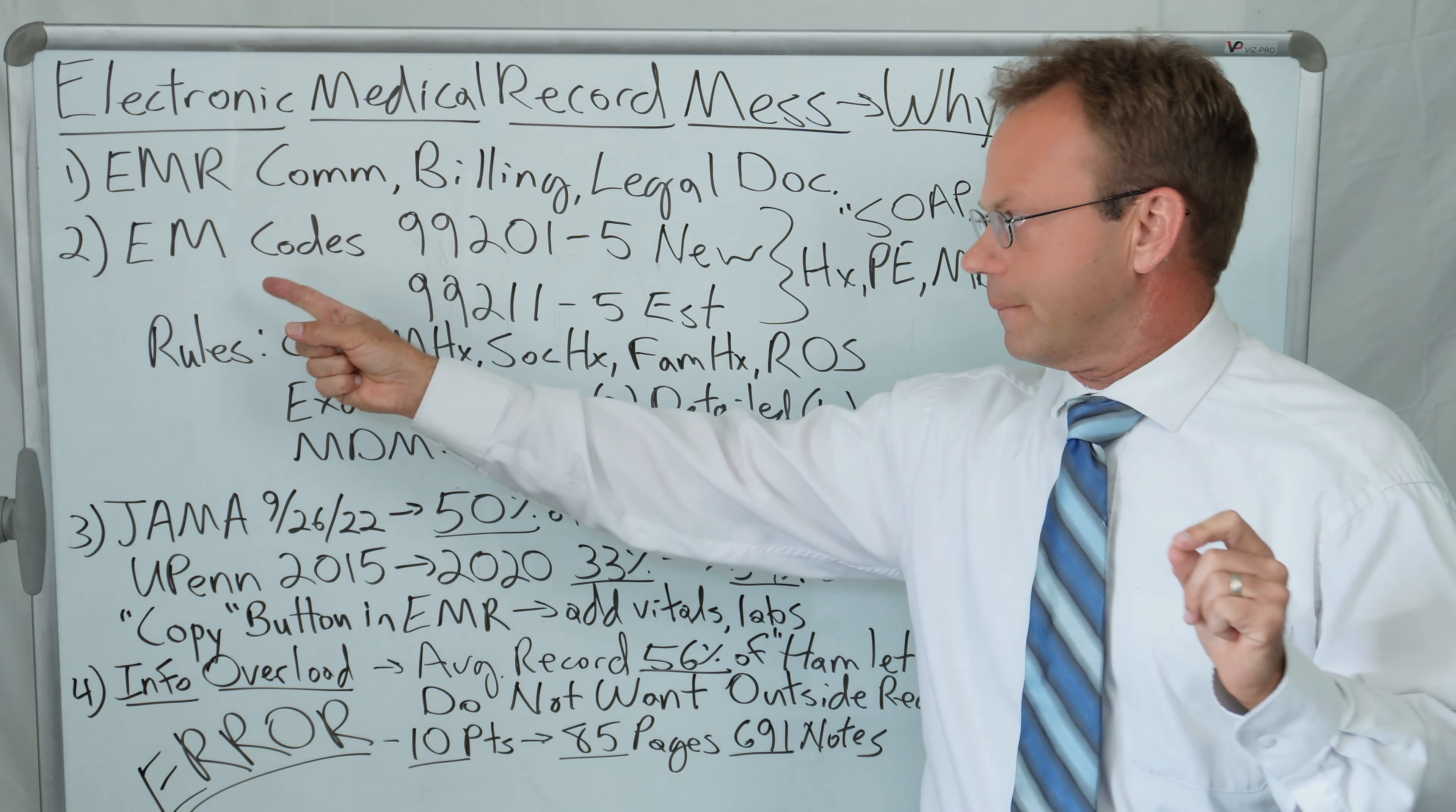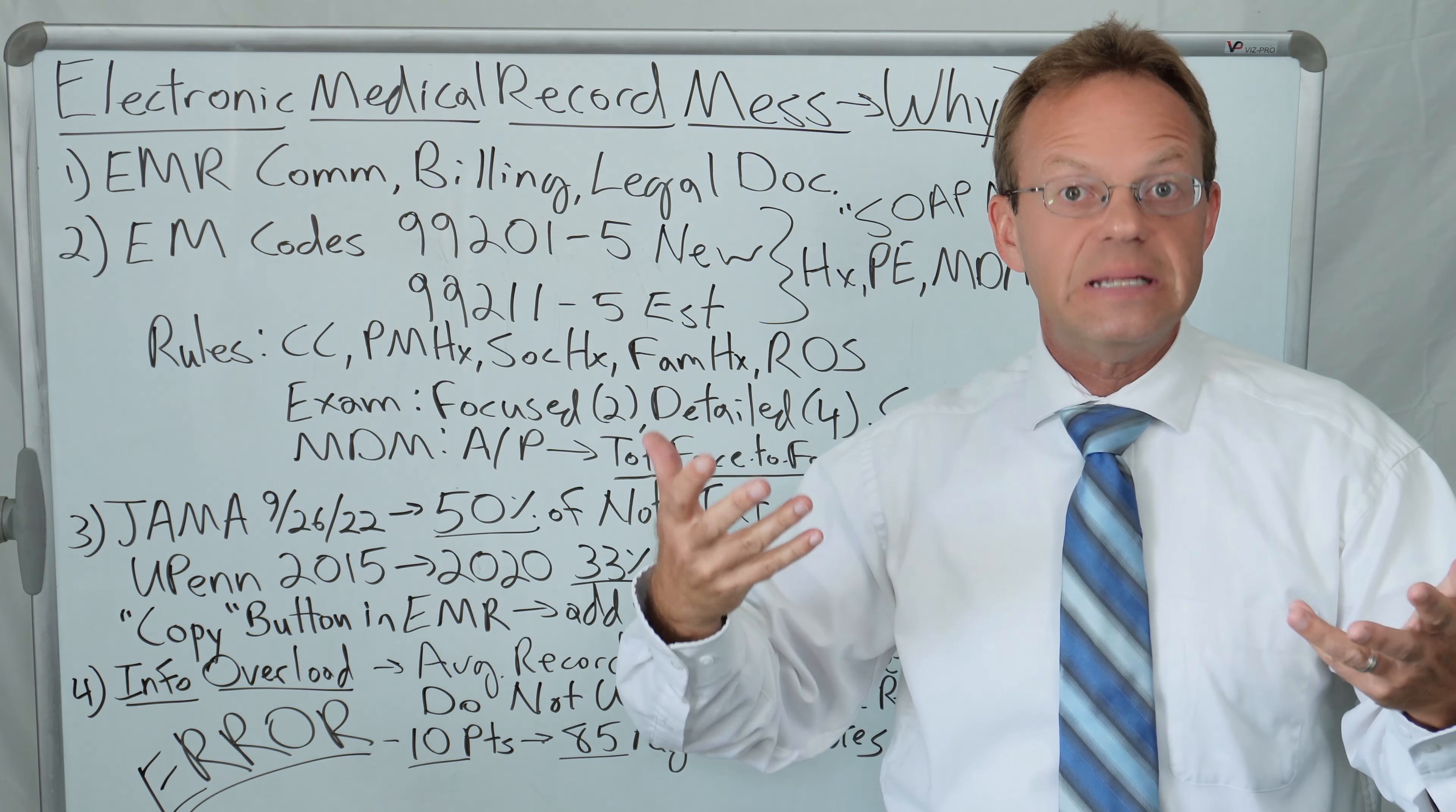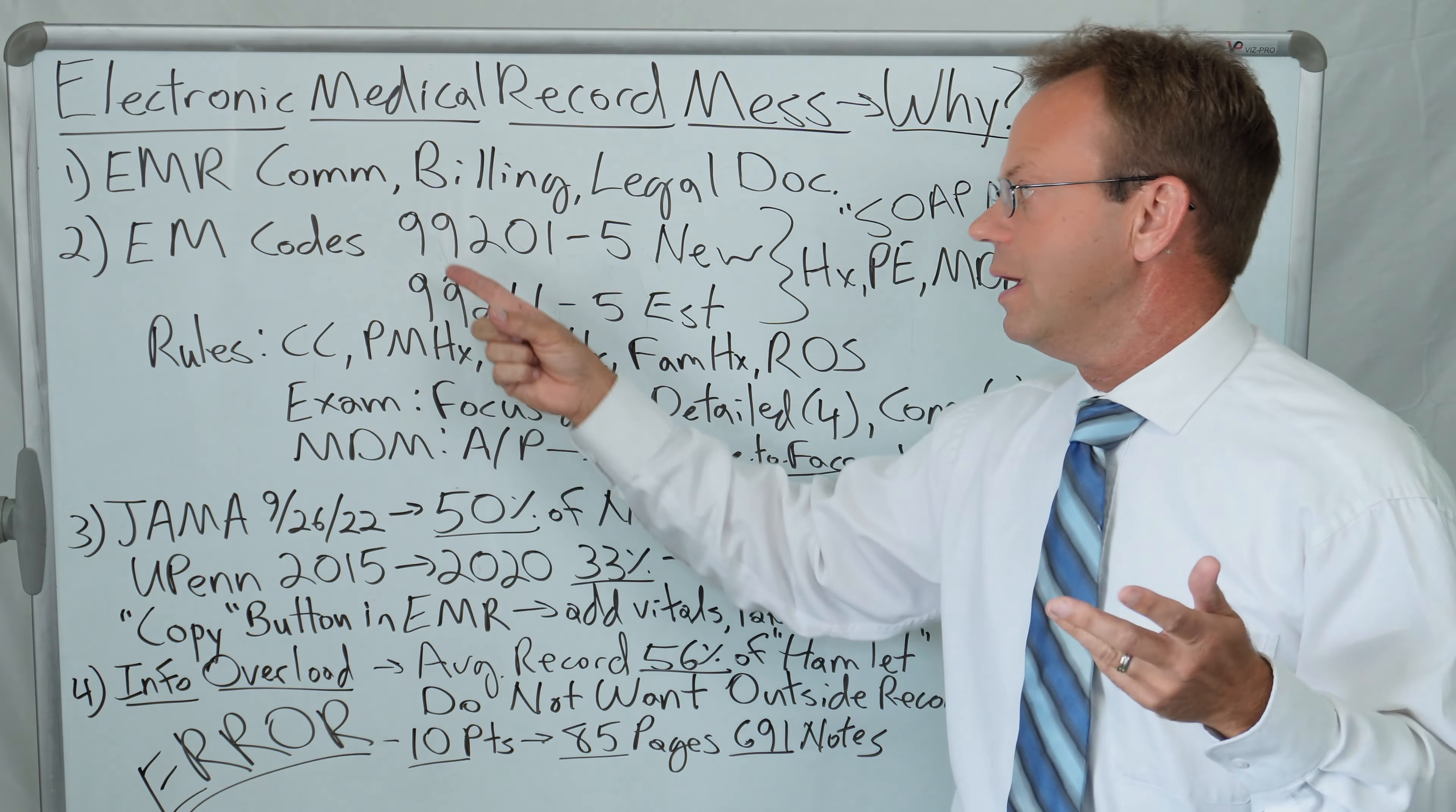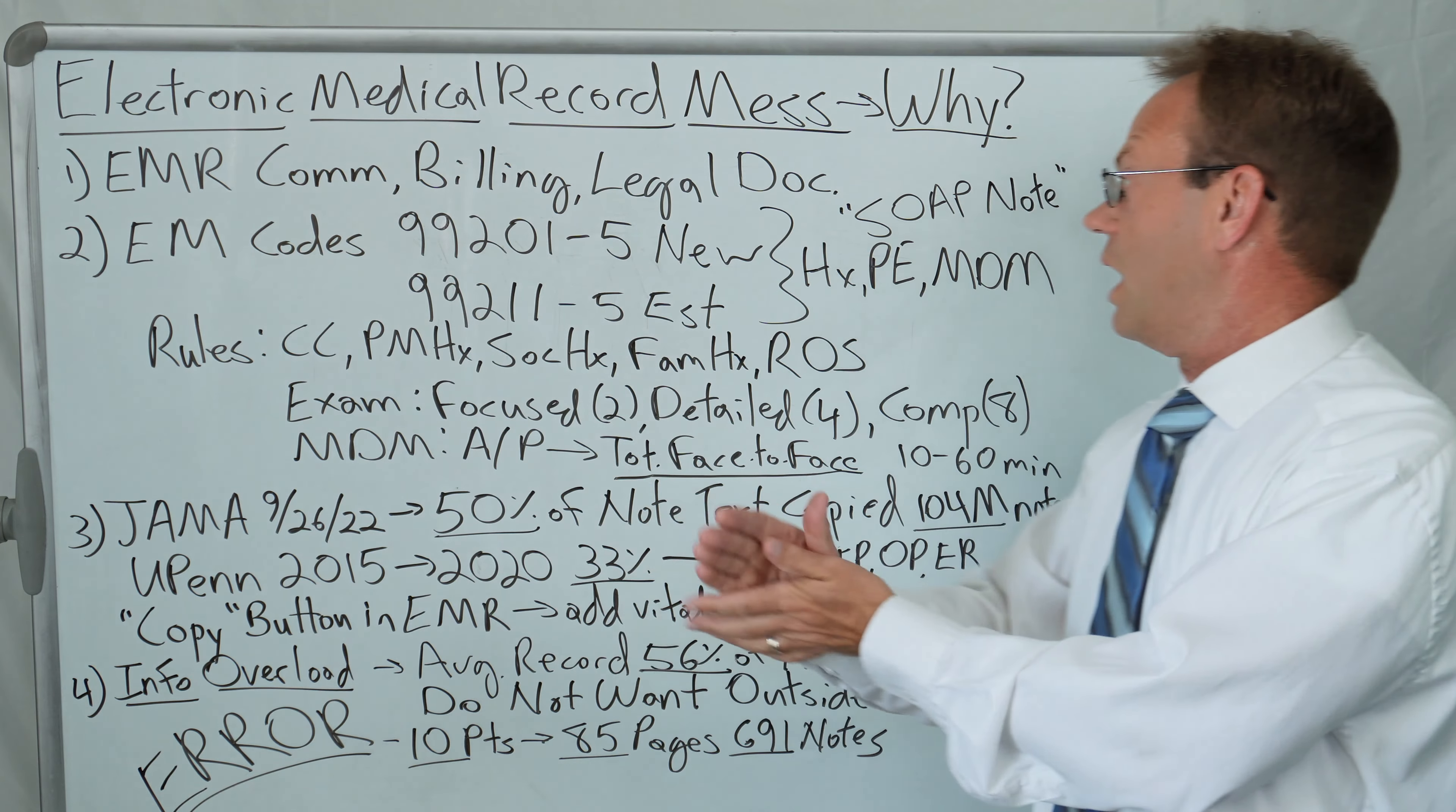In terms of the billing, there has to be documentation in the medical record to substantiate specific billing codes. These are referred to as E&M codes or Evaluation and Management codes. The E&M codes are very easy to spot because they all start with 99. For a new patient visit, it's a 99201, and then it goes 02, 03, 04, and 05. The 1 through 5 are the differences in the level of complexity of the visit. A 1 is the simplest, and a 5 is the most complicated.